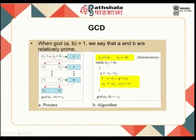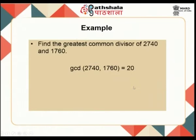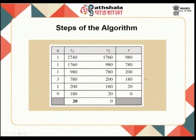This algorithm for finding the GCD of given numbers is called the Euclidean algorithm. It makes finding the GCD simpler and easier, even for large integers.